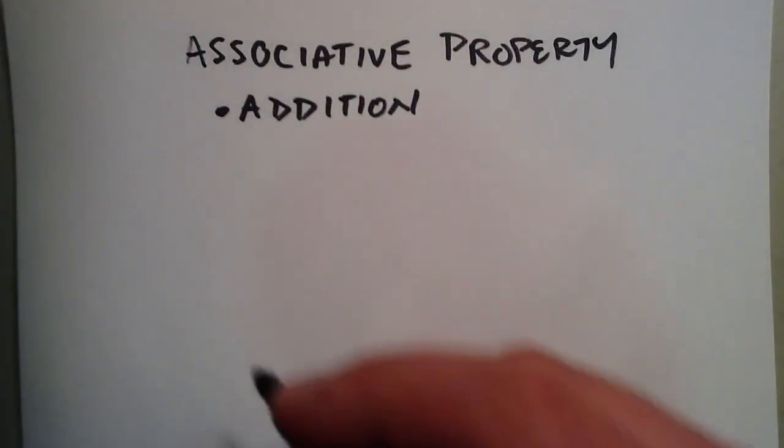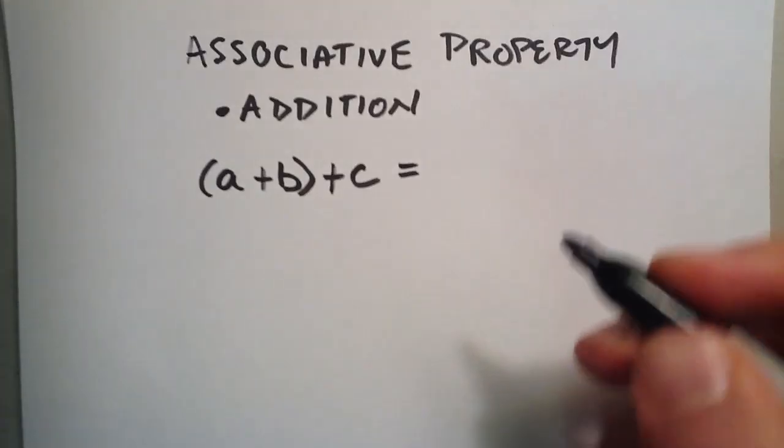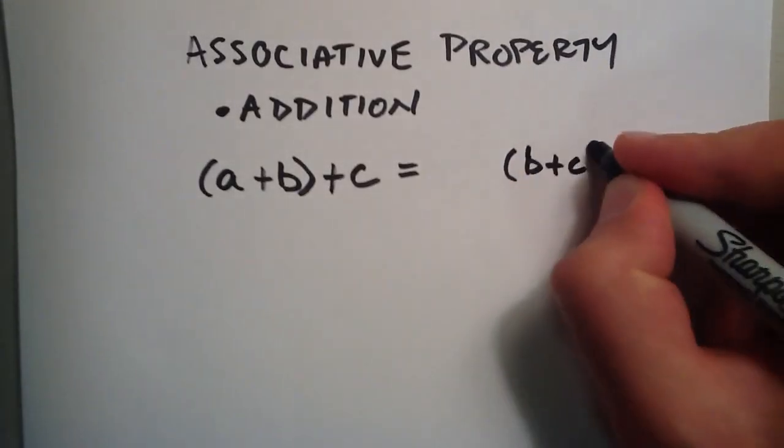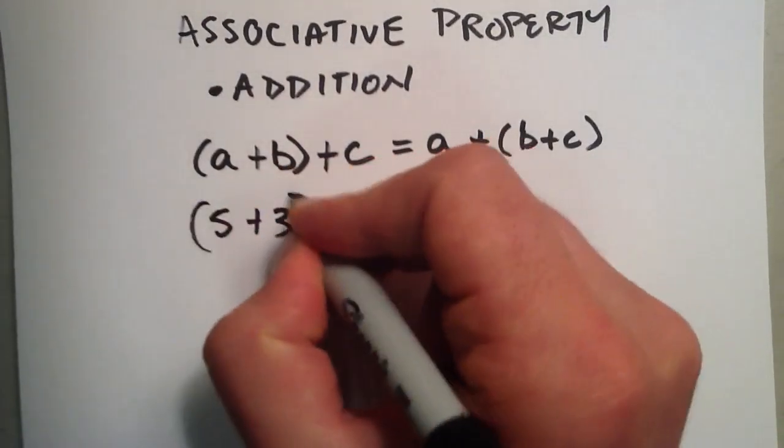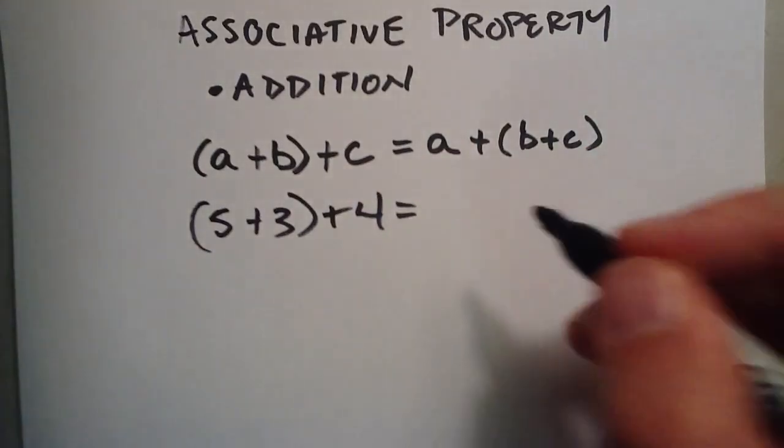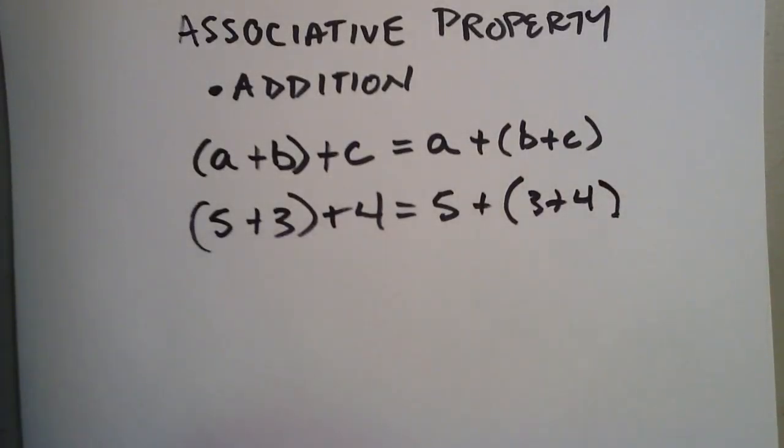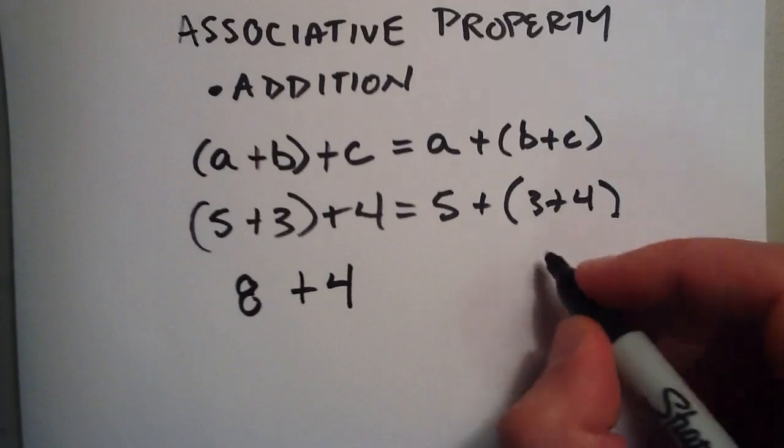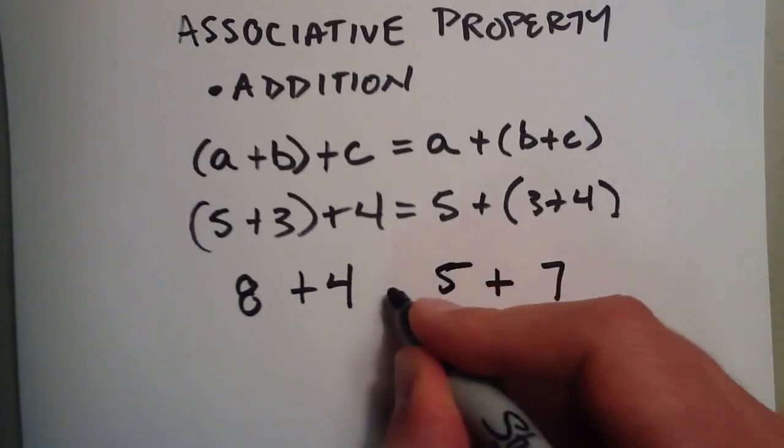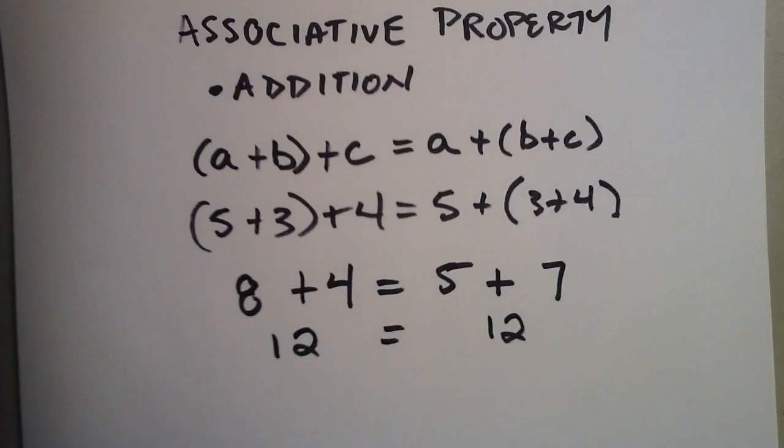The associative property of addition basically says that if you take two numbers, A plus B, and then add a third number, C, then that's the same thing as adding the B and the C together first, and then adding the A. That's the associative property of addition. Now, to give an example that works here, 5 plus 3 plus the 4 should be the same as adding the 3 and 4 first, and then adding that result to 5. So, 5 plus 3 gives us an 8, and we'll add that result to 4. On this side, we're going to add the 3 and the 4 first, which gives us a 7. We're going to add that result to 5. Now, 8 plus 4 is 12, and 5 plus 7 is 12. So, there you go. It works.